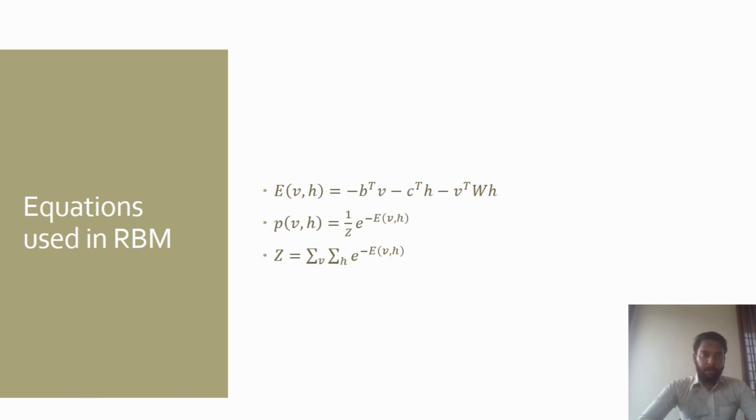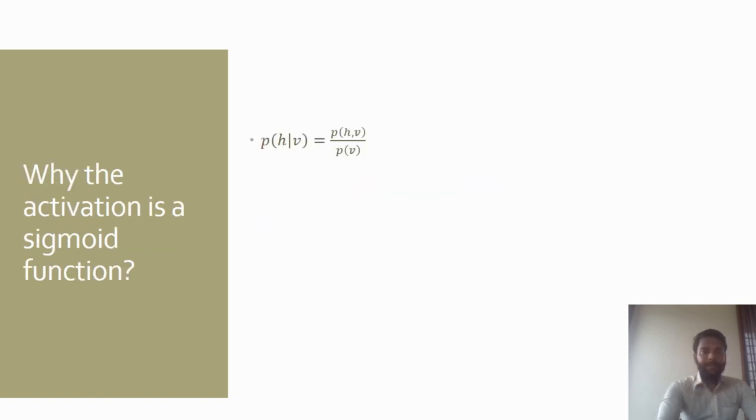Here z is the normalization constant. Next we will see why RBM uses the sigmoid function. This will be fully mathematical. We will start with the conditional probability: p(h|v) equals p(h,v) divided by p(v). Now we will substitute the probability values which we have studied earlier.